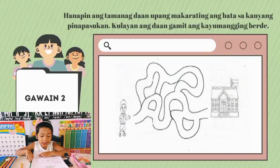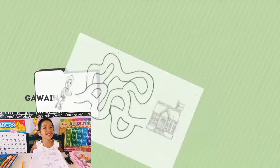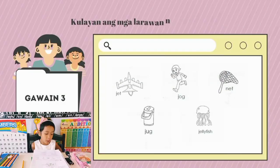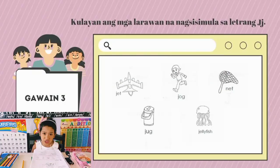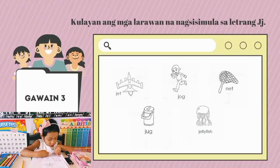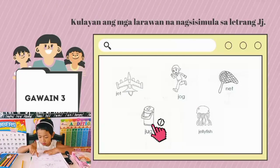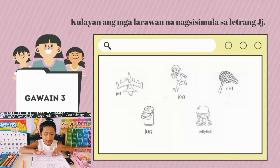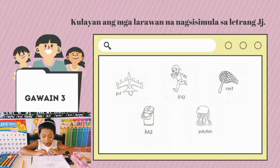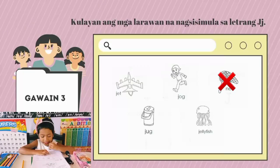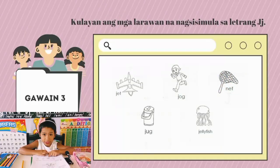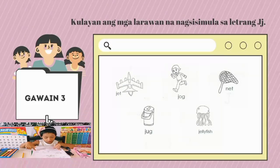Sunod na gawain: kulayan ang mga larawan na nagsisimula sa letrang J. Meron ditong jet, jug, net, jug, at jellyfish. Lahat yan ay kukulayan ko maliban sa net, dahil nagsisimula siya sa letter N, hindi letter J. Tara, kulay na natin ang mga tamang sagot.